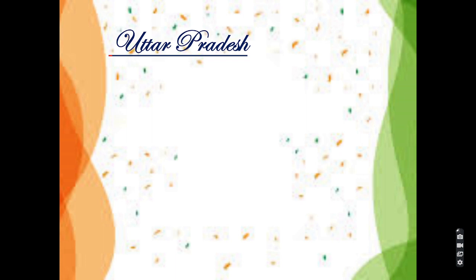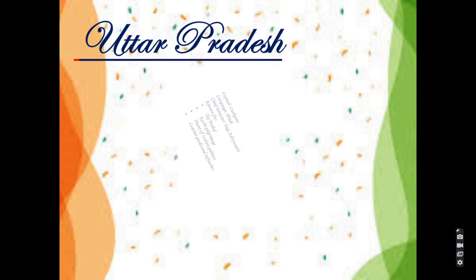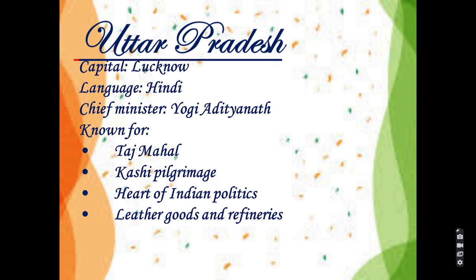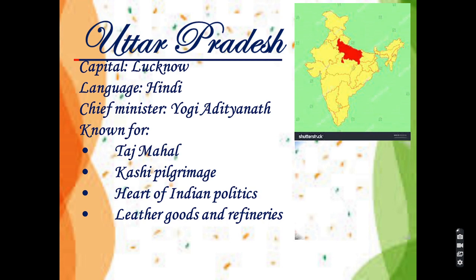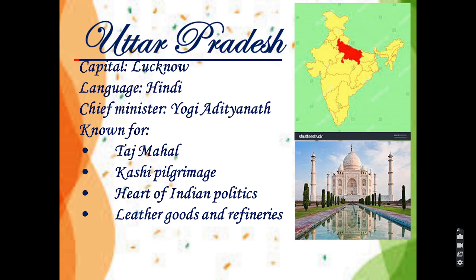Next state is Uttar Pradesh. Uttar Pradesh is a state in North India with over 200 million inhabitants — it is the most populated state in India. The capital of Uttar Pradesh is Lucknow. The language used is Hindi. The chief minister of Uttar Pradesh is Yogi Adityanath. Uttar Pradesh is known for its Taj Mahal located in Agra, Kashi pilgrimage, and being the heart of Indian politics.